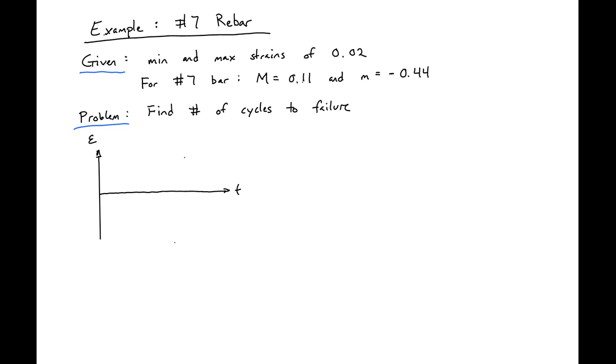In this example problem, we're going to be finding the number of cycles to failure of a number 7 bar. We have a maximum and minimum strain that we'll be cycling of 0.02.